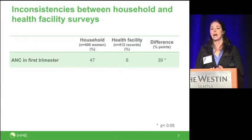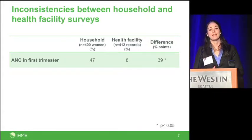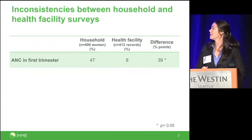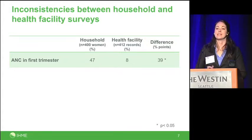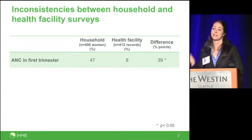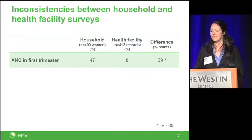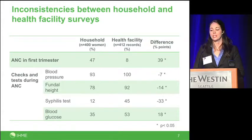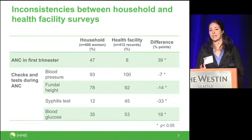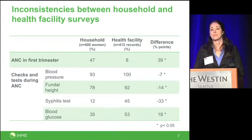We also found large differences when comparing the content of visits that women report versus what we see in health facilities. Since we asked women where they went for antenatal care, we could match 400 women with 32 of the facilities we surveyed. We found that 40% of women attending a health facility reported a first-trimester visit, but according to medical records, that value was only 8%. Likewise, for blood pressure, fundal height measurement, syphilis testing, and blood glucose testing, women consistently report fewer checks than are recorded in medical records, and all these differences are statistically significant.